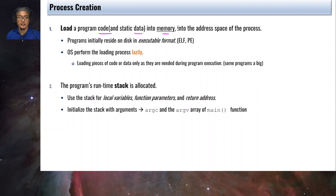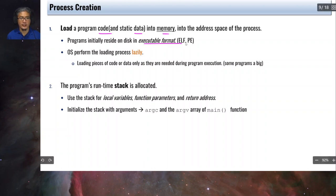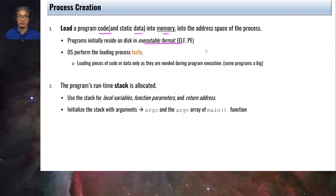Programs initially reside on disk in executable format, like ELF — that's why I use the .elf extension to indicate that it is an executable file, though it's not actually required. For Windows, we have the PE format, with .exe extension. This process of loading the contents of the program to the address space of the newly created process can be performed lazily — meaning you don't load everything in one shot.